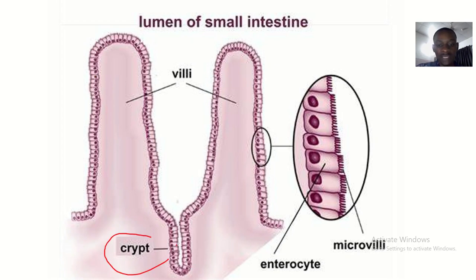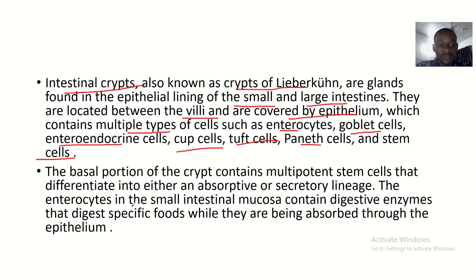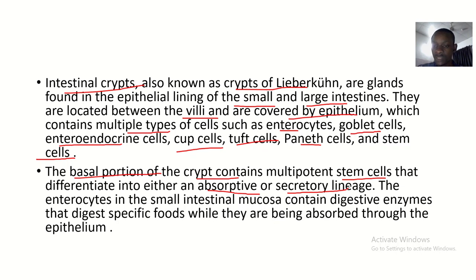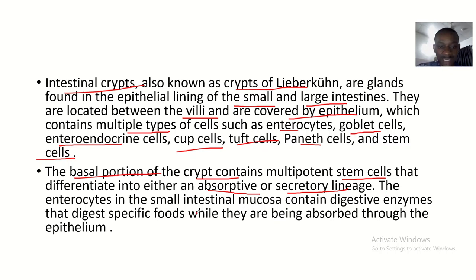The crypts are located between the villi and covered by epithelium. The basal portion of the crypt contains multipotent stem cells that can differentiate into either an absorptive or secretory lineage. The crypt contains cells that are not yet fully differentiated — they are only destined to become absorptive or secretory cells.